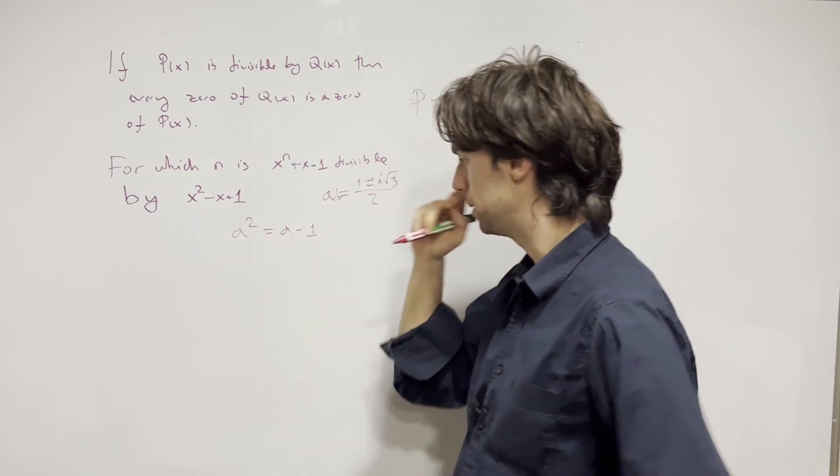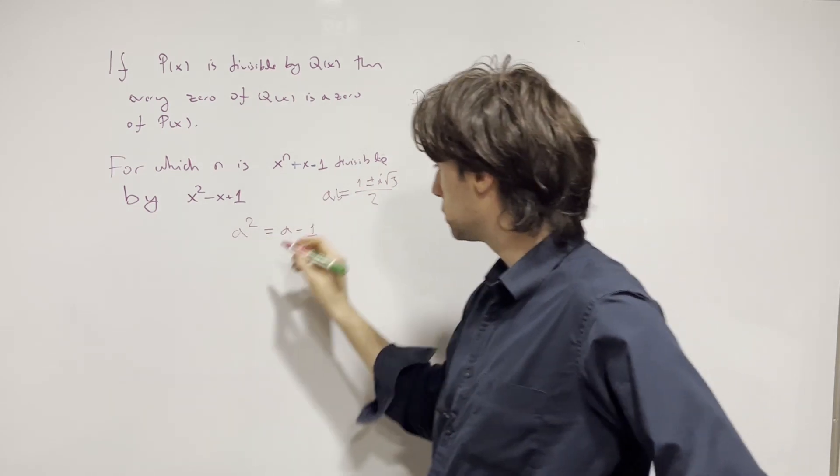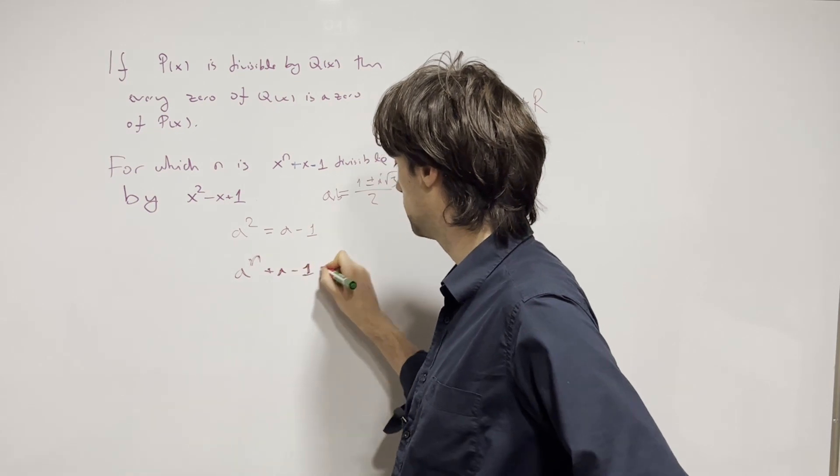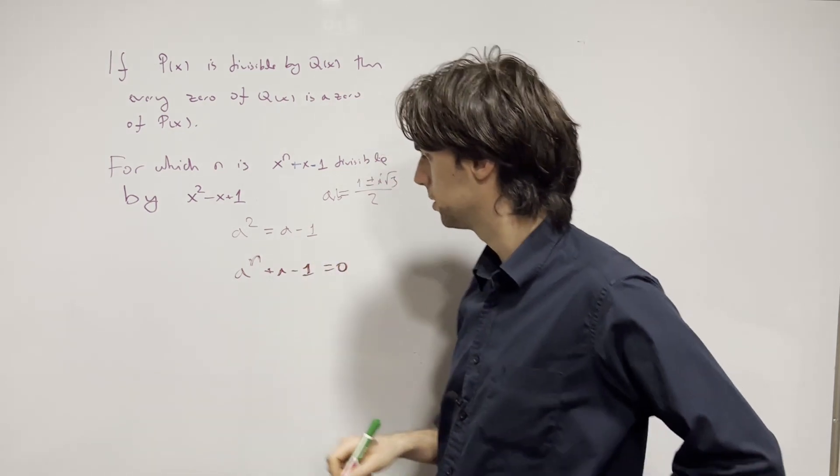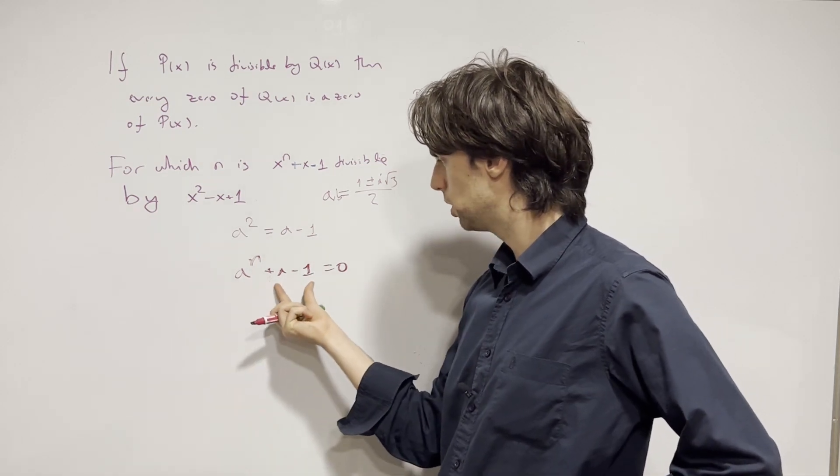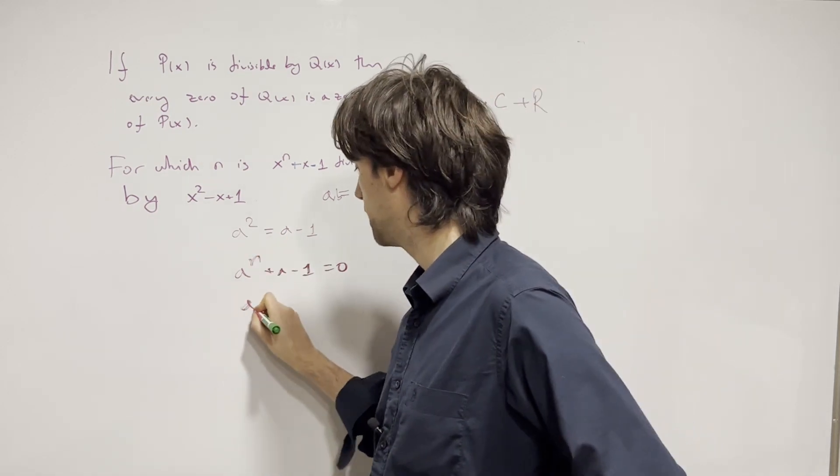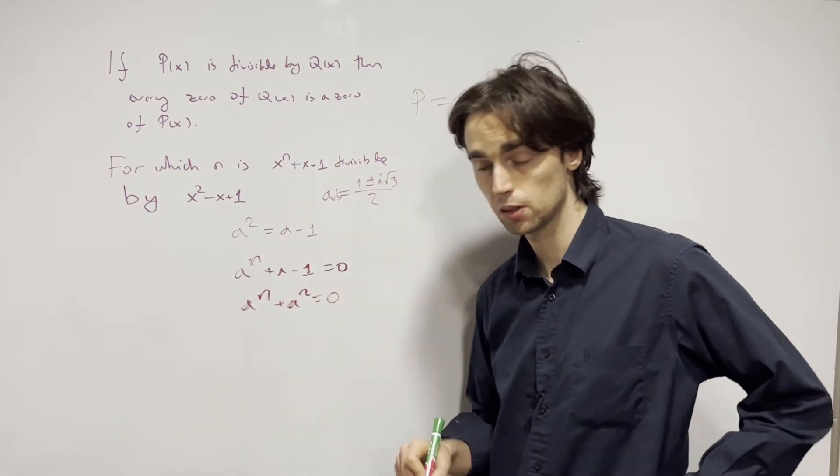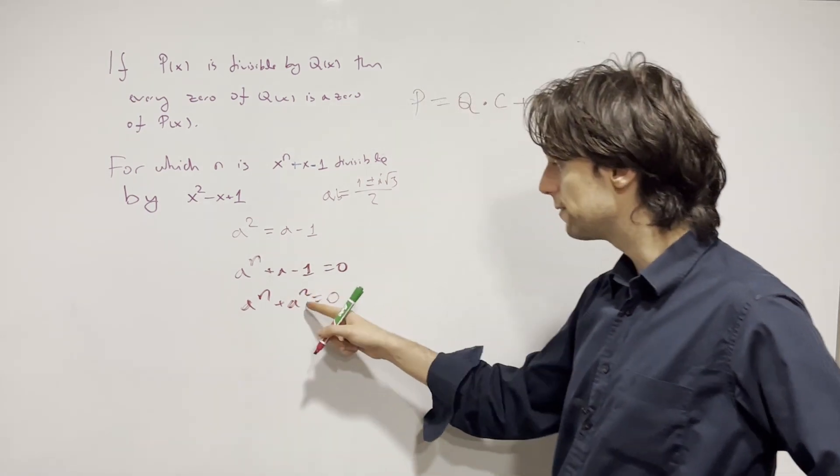So now, how do we do this? We have these two different zeros, a and b, and we also need to have a^n plus a minus one equals zero if the problem statement is true. Now, what is a minus one? Well, that is a squared, so we need to have a^n plus a squared equals zero.